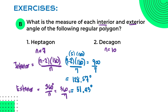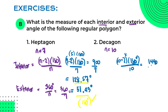To check, the interior and exterior angles must be supplementary — 128.57 plus 51.43 equals 180 degrees, so the answer is correct. For a decagon with 10 sides: (10 − 2) × 180 equals 8 × 180 equals 1440, divided by 10 gives 144 degrees per interior angle. The exterior angle is 360 divided by 10 equals 36 degrees. Adding 144 and 36 confirms they are supplementary, equaling 180 degrees.